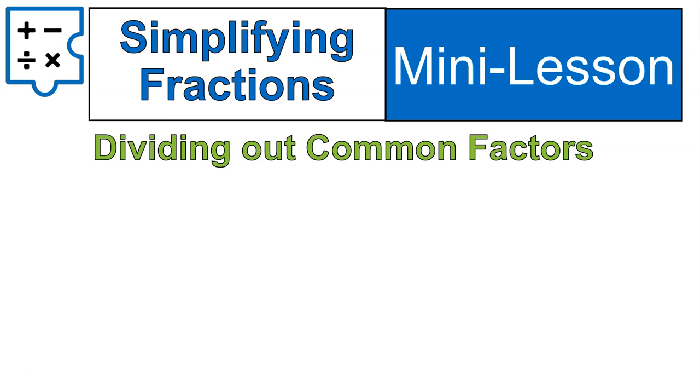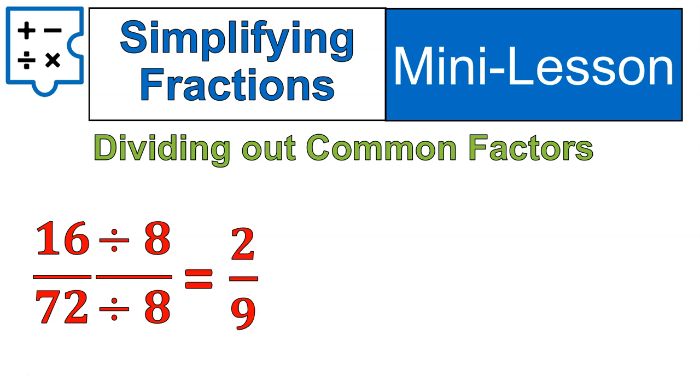First off, let's talk about simplifying fractions. When you simplify fractions, you basically divide out any common factors. For example, if I had 16 over 72, I could know that a common factor of both 16 and 72 is 8, so we divide both the top and bottom by 8. That leaves us with 2 over 9. This is the way that we simplify fractions. We divide out common factors.